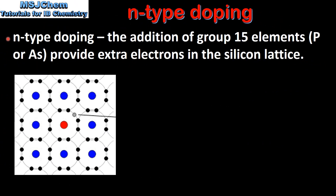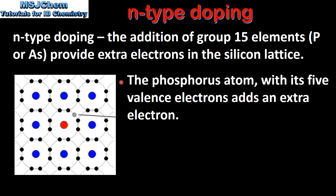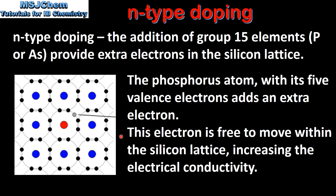First we look in more detail at N type doping. The addition of group 15 elements such as phosphorus or arsenic provides extra electrons in the silicon lattice. In this diagram we can see the silicon atoms with their blue nuclei and the one phosphorus atom with a nucleus colored in red. The phosphorus atom with its 5 valence electrons adds an extra electron to the silicon lattice. This electron is free to move within the silicon lattice, increasing the electrical conductivity.